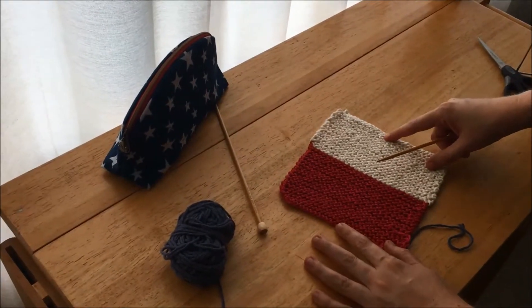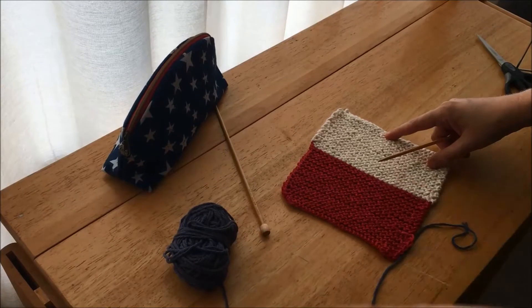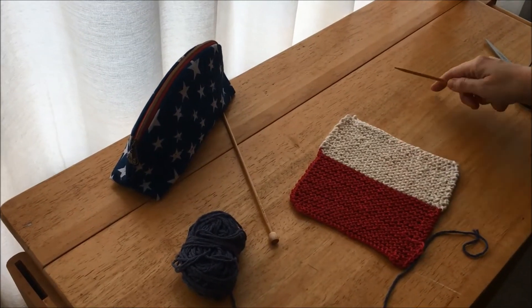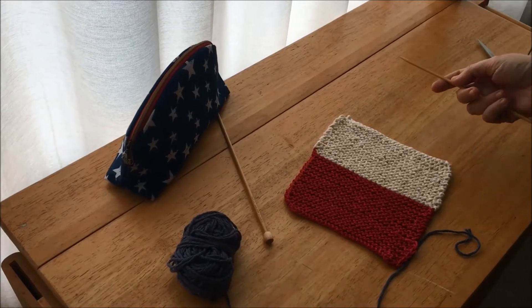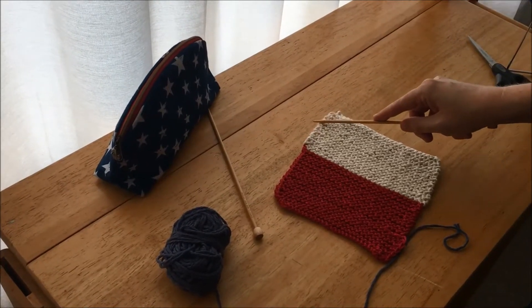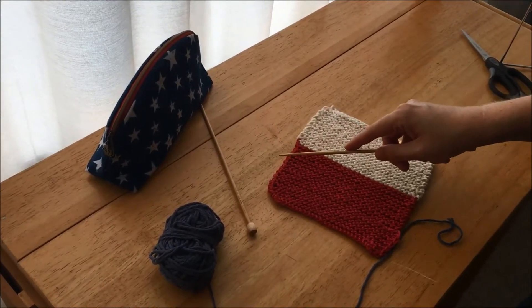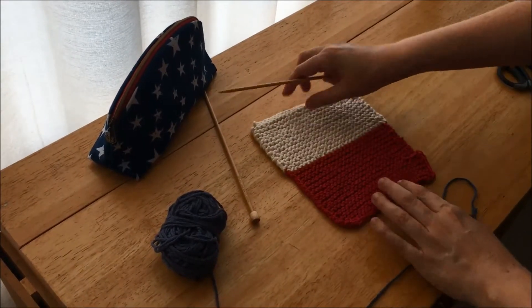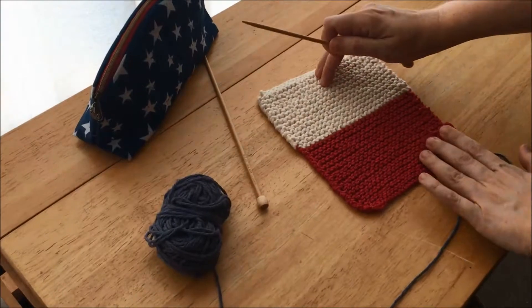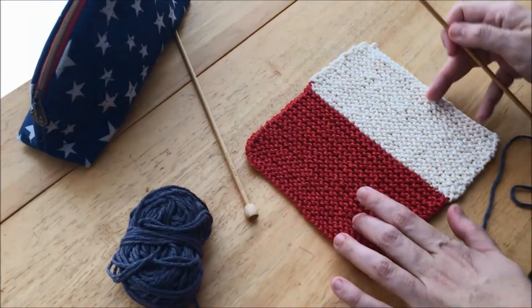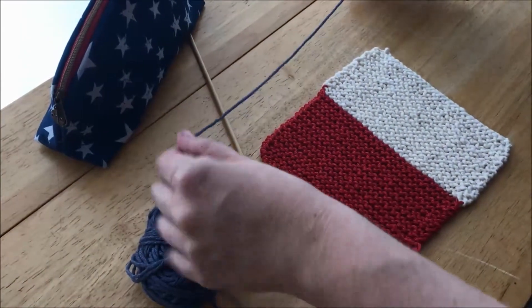Today we are learning how to pick up stitches along the side of the work. You see we already have the red done of our flag and the white done, and now you're just going to turn it this way and have the blue ready.